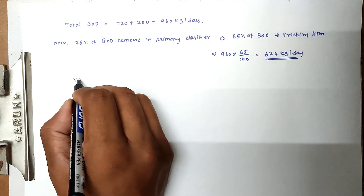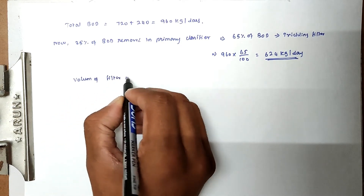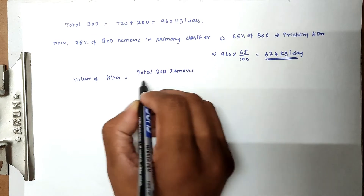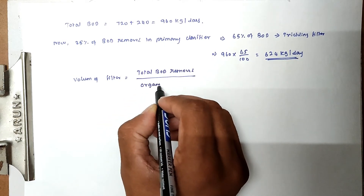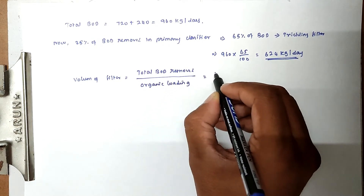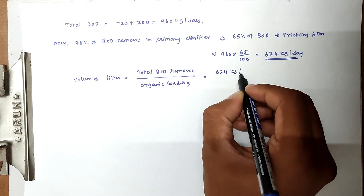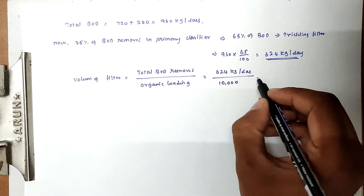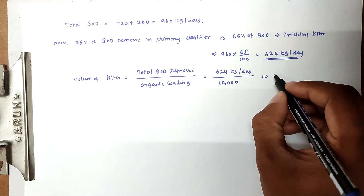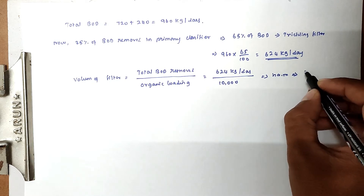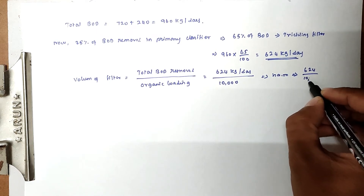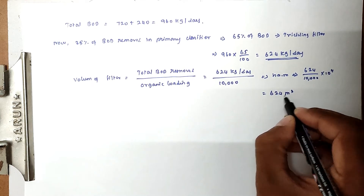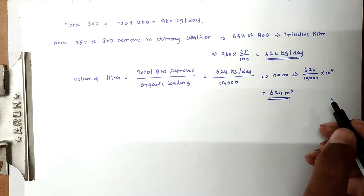The volume of filter equals total BOD to be removed divided by organic loading. So 624 kg/day divided by 10,000 kg per hectare meter per day. Converting: 624 / 10,000 × 10⁴ = 624 cubic meters.